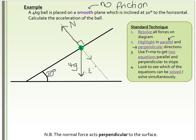I'm going to highlight everything parallel to the slope in red — just this component. And then the perpendicular components: the normal force and the perpendicular component of the weight. I'll have a blue equation and a red equation. The only tricky part is resolving the components of weight, as we need the angles in that triangle. We can see it's a right-angled triangle between the parallel and perpendicular components, and the angle up here is also 20 degrees due to angles between parallel lines.